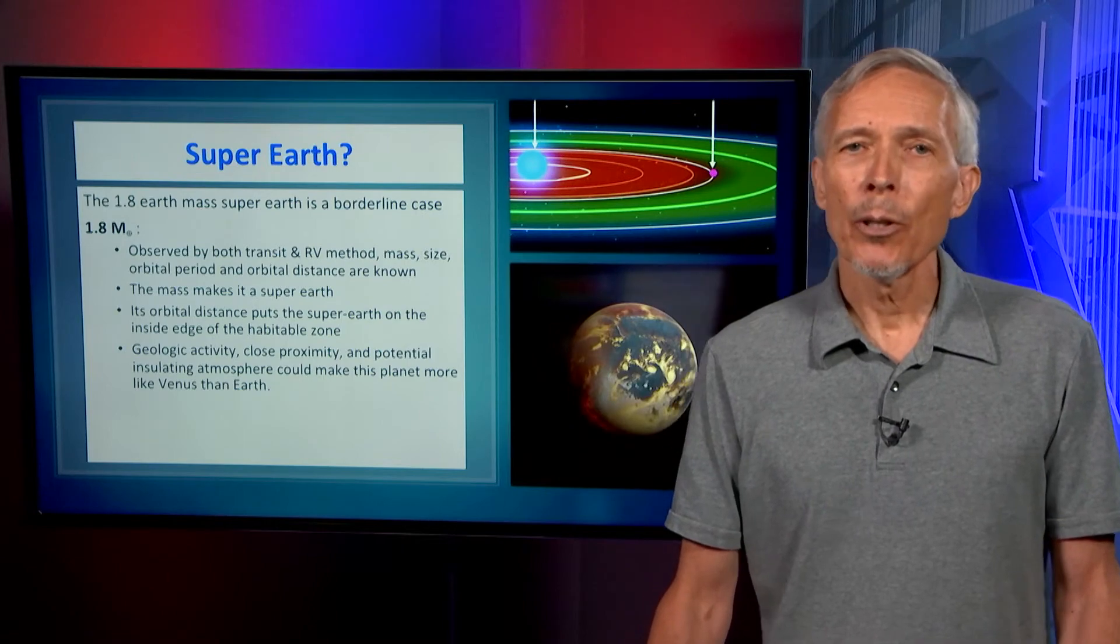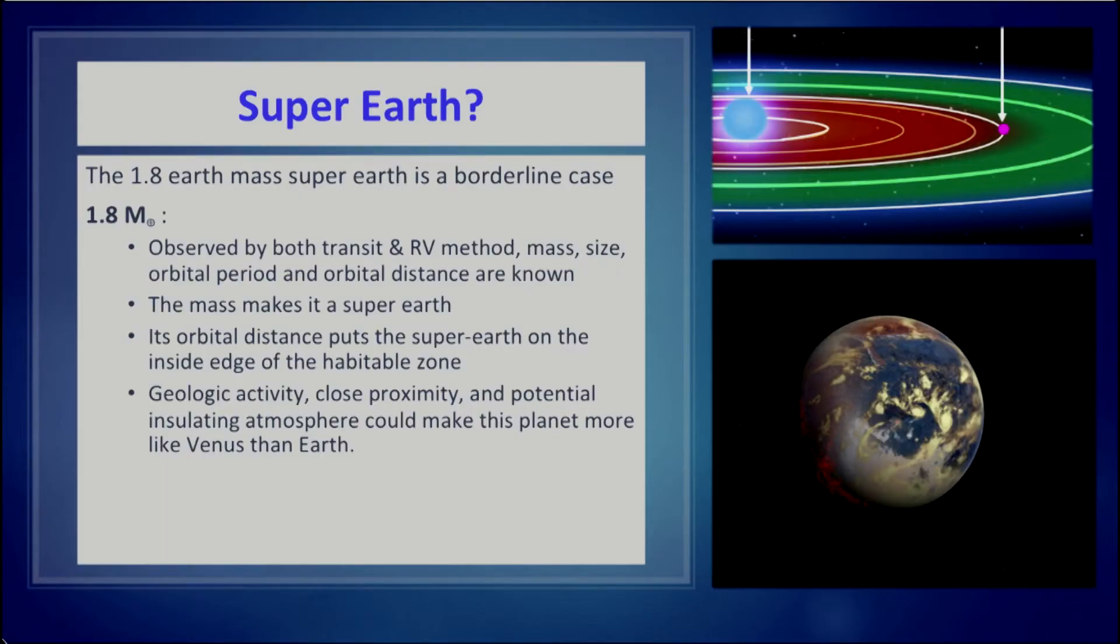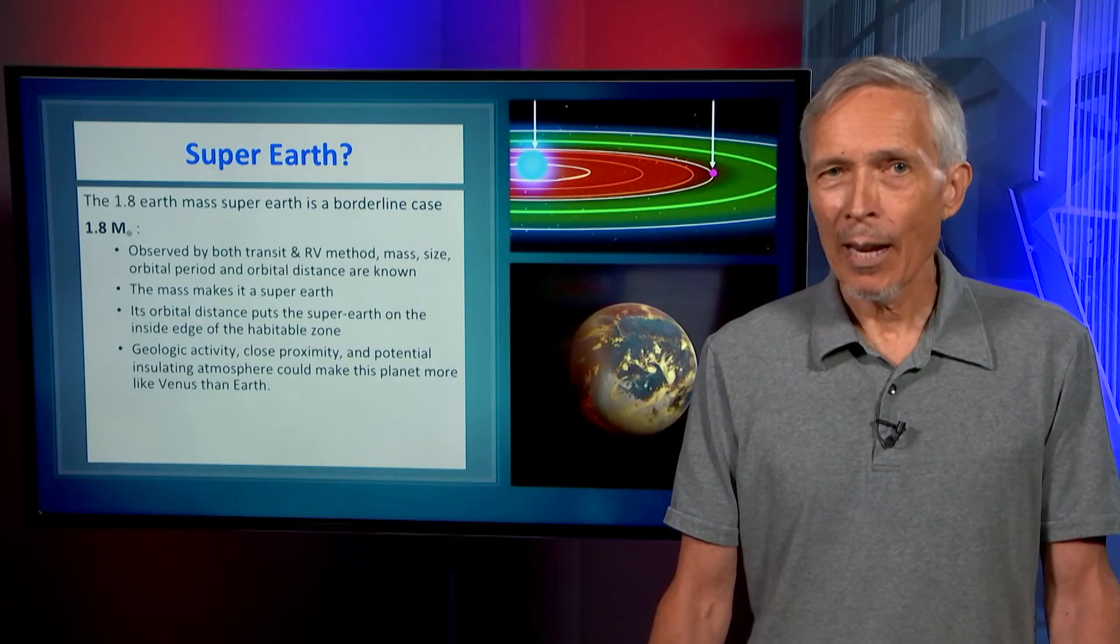What about the super-Earth? The super-Earth is a borderline case, almost two times the size or mass of the Earth. Let's imagine it is also measured by both methods, so we have mass, size, and mean density. We know its orbital period and can calculate its orbital distance from Kepler's laws, and we know the star's luminosity is slightly more than the Sun. The mass makes it a super-Earth, and its orbital distance puts it on the inside edge of the habitable zone. Geological activity for a super-Earth is quite likely. The close proximity and the likelihood that a massive super-Earth could retain a significant atmosphere make this planet likely to be too hot. In this case we have too many additional heat sources beyond the fact that it's already orbiting a hotter star than the Sun. So this planet, although nominally by its size or mass in a region that's interesting, is probably uninhabitable.